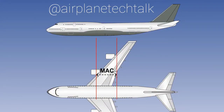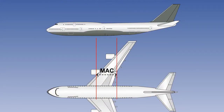In the previous examples, the centre of gravity position and limits were given as distances from a datum. As an alternative, the position of the centre of gravity and its limits can be expressed as a percentage of something called the Mean Aerodynamic Chord, or MAC. This is the preferred method used on many swept-wing commercial aeroplanes, because the centre of gravity affects many aerodynamic characteristics, in particular stability.